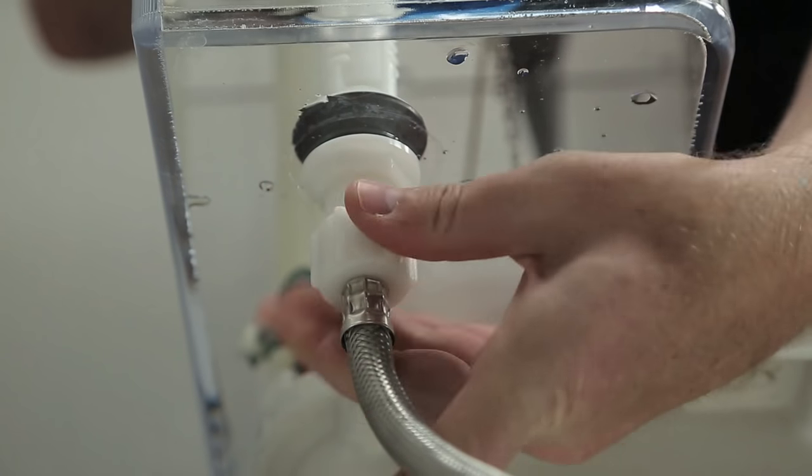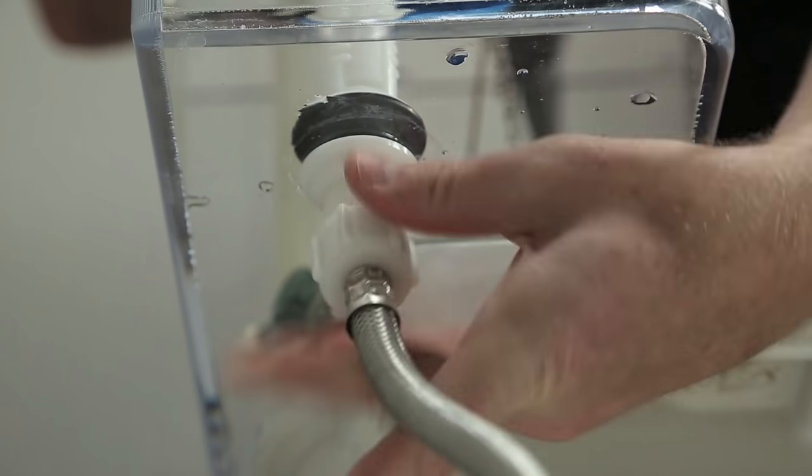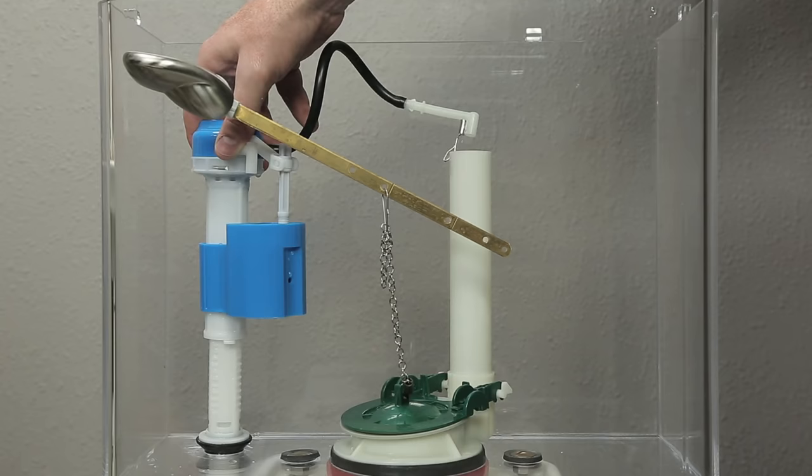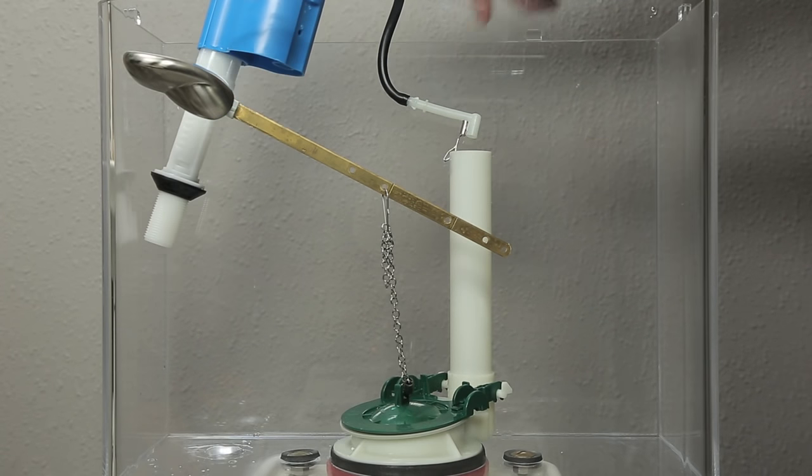Remove the water supply connector nut and the lock nut by turning them counter-clockwise. You may need a wrench to loosen the nuts. Lift the old fill valve out of the tank.